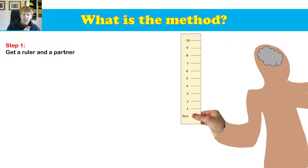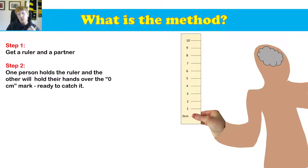Okay, so step one, get a ruler and a partner. Step two, one person holds the ruler from the top up here, they'll be holding the ruler up here. And the other will hold their hands over the zero centimeter marks, just like I just showed you, ready to catch it.